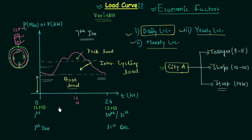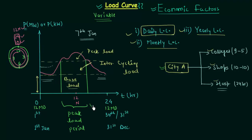We can also divide the time axis into two different periods. The first one is the peak load period — the time during which the peak load occurs. Then we have the off-load period — the periods when there is no peak load. So the time axis is divided into the peak load period and the off-load period.